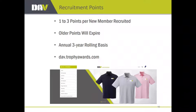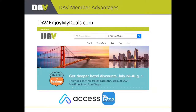If you haven't already, check out DAV.EnjoyMyDeals.com — that's our new member advantages site. Register with your membership number, name, email address, and a password you create. Then download the MyDeals app on your phone — Apple, Android, whatever — and log in with those credentials. You'll have access to some very nice discounts. Our previous member advantages program had about a baker's dozen of direct vendor relationships that were resource-intensive to maintain. Now through the MyDeals app, you literally have access to thousands of discounts.